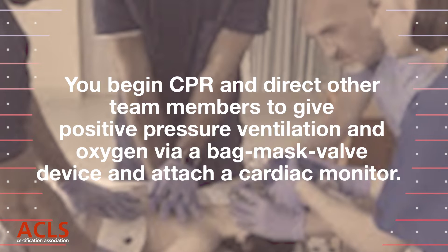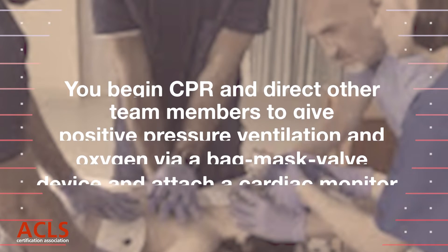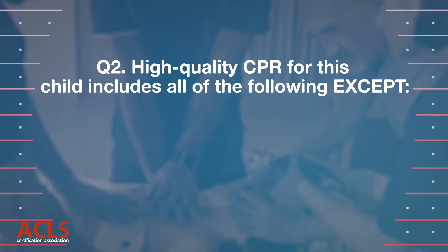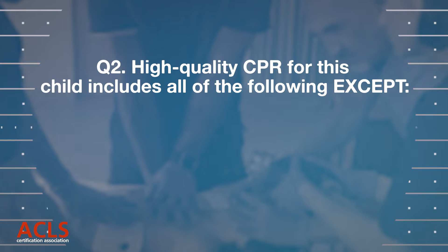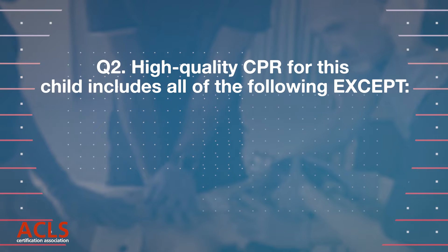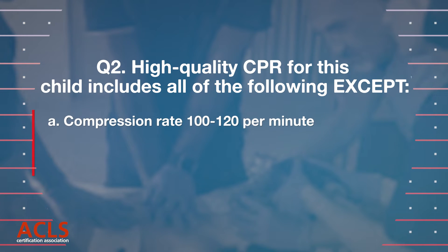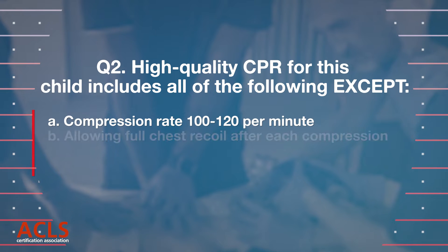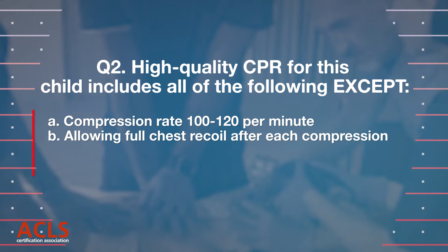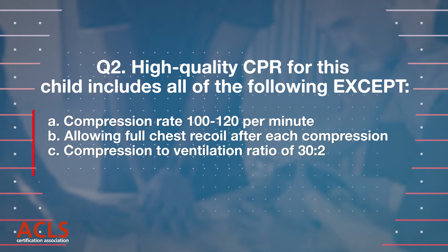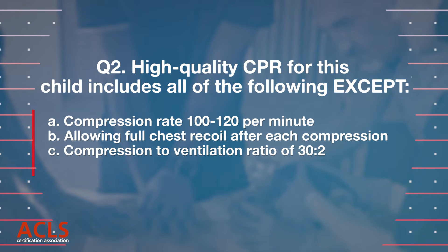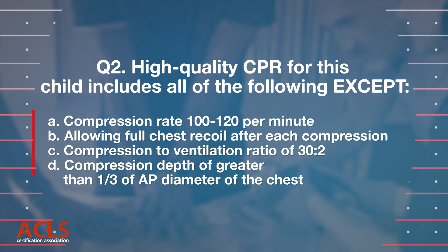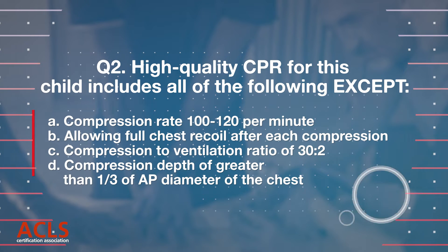You begin CPR and direct other team members to give oxygen via a bag-mask-valve device and attach a cardiac monitor. Question 2: High-quality CPR for this child includes all of the following EXCEPT: A) Compression rate 100-120 per minute, B) Allow full chest recoil, C) Compression-to-ventilation ratio of 30:2, D) Compression depth of greater than one-third of AP diameter of the chest.